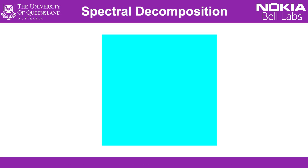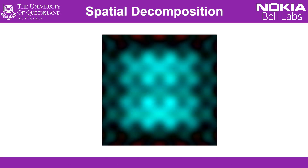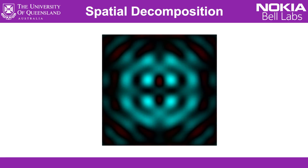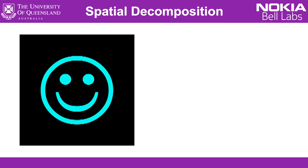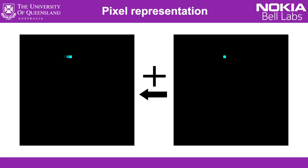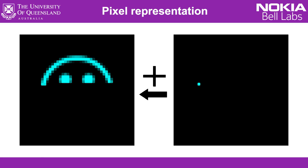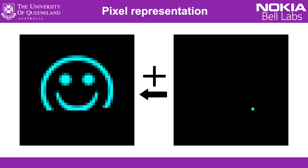But a beam of light doesn't just have colors — it also has a shape, it conveys an image, it looks like something. How can that be described? Let's take this image here, a smiley face. We can think of it as being composed of a bunch of pixels. We can make our smiley face by adding together a set of these pixels. Each pixel has its own location, it doesn't overlap with any of the other pixels, all the pixels are independent. But added together, they make our smiley face, and the more we add, the better the quality becomes.